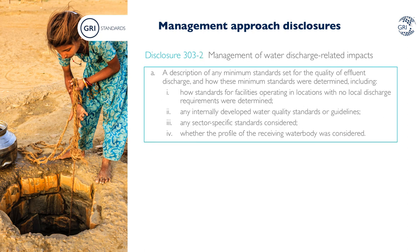Disclosure 303-2 requests an organization to disclose narrative information about how it manages impacts related to water discharge. It requests a description of any minimum standards it has set for the quality of effluent discharge and how these minimum standards are determined — including how an organization determines standards for facilities and locations with no local discharge requirements, whether it has developed any internal water quality standards or guidelines, whether it has considered any sector-specific standards, and whether the organization has considered the profile of the receiving water body. In the context of the GRI Standards, minimum standards are those that go beyond regulatory requirements in controlling the quality of effluent discharge.